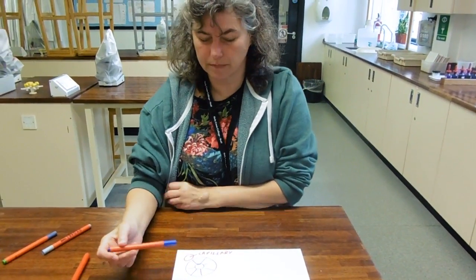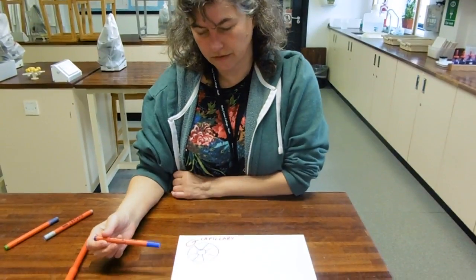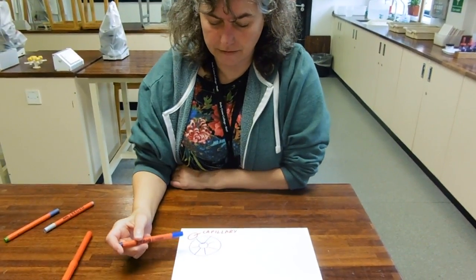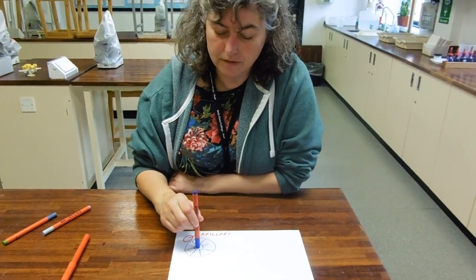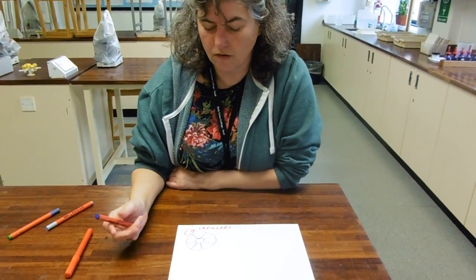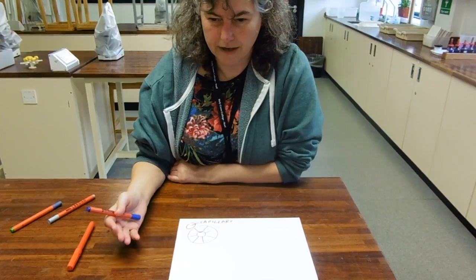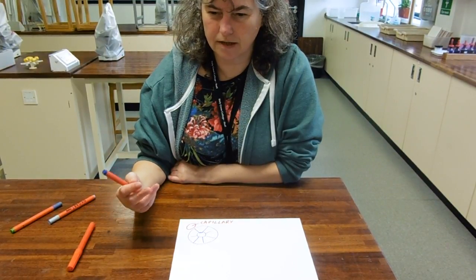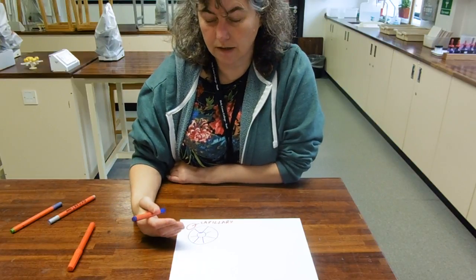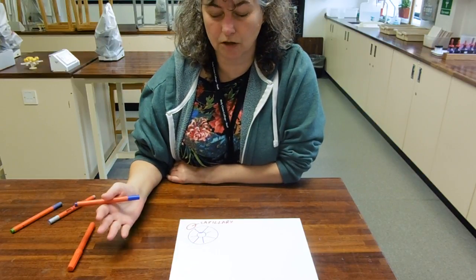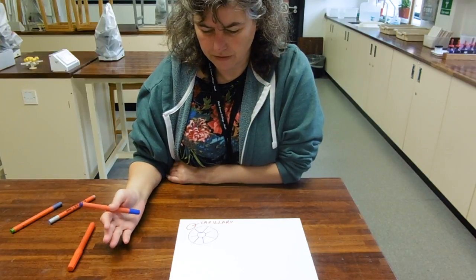The proximal convoluted tubule—remember proximal meaning close to the glomerulus and the Bowman's capsule in this case—what's passing down there is a mixture, a solution of urea and glucose and amino acids and salt at exactly the same concentration as those things were in the blood because it's just been filtered.